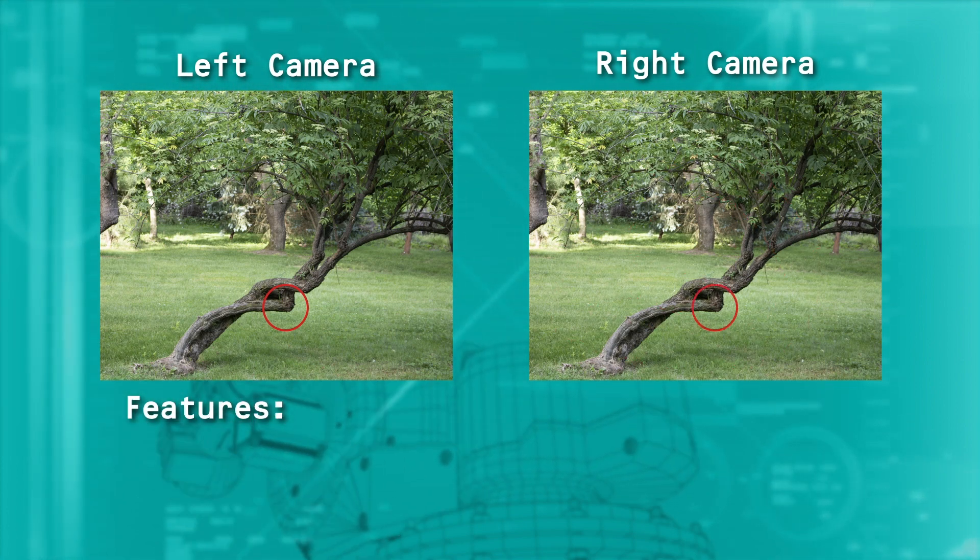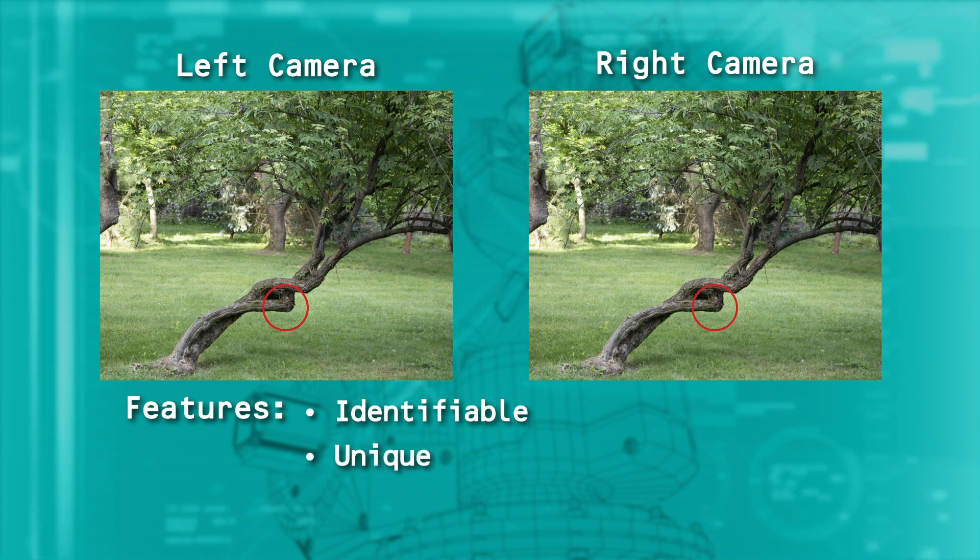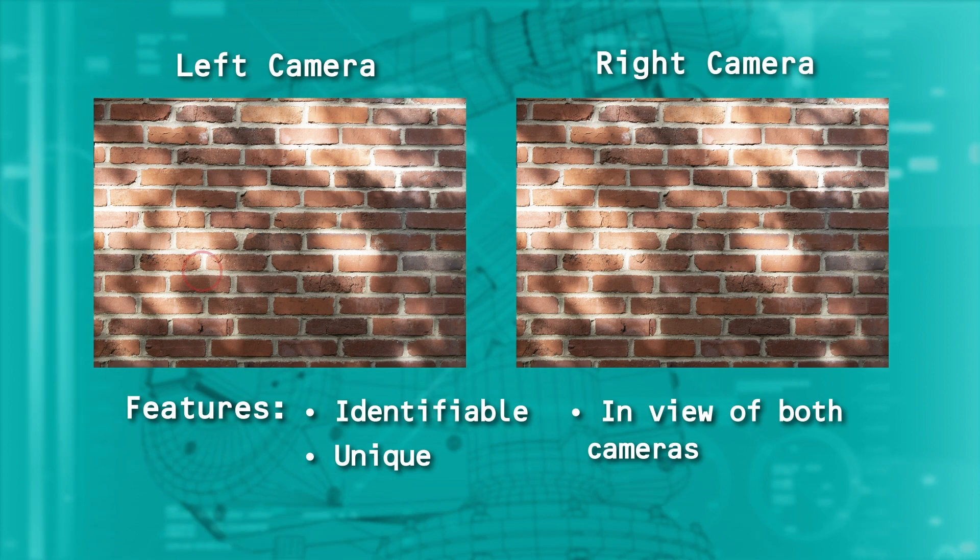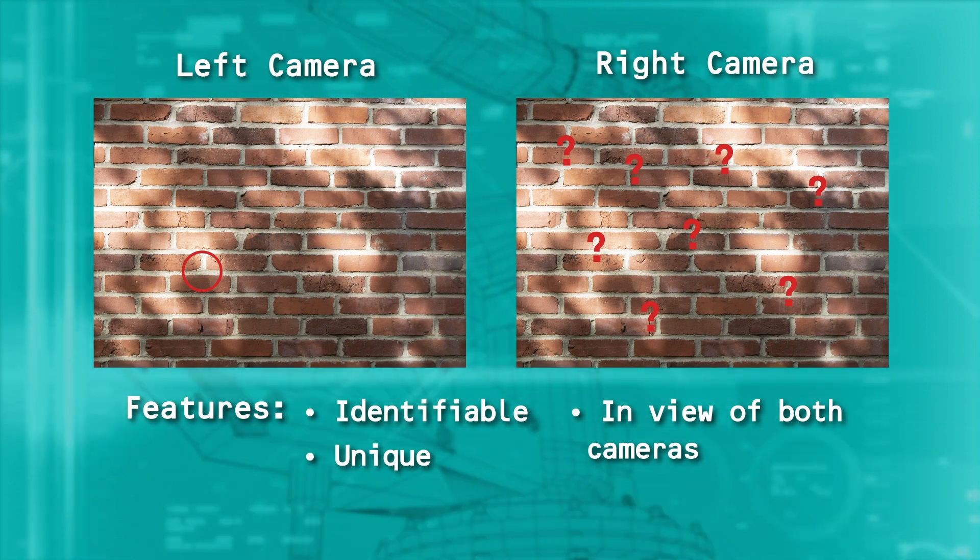Features can be anything that the camera system can easily identify, such as unique patterns or corners. The key idea is that both cameras need to be able to see and identify the features, and they need to be unique. The intersection point of some bricks in a brick wall might be easy to find, but it isn't unique, so you can't tell which junction you are looking at.